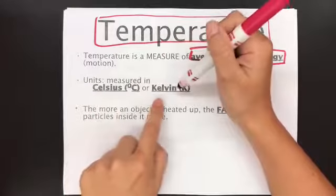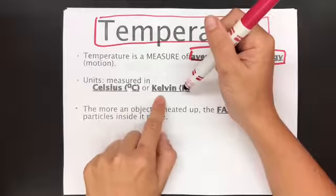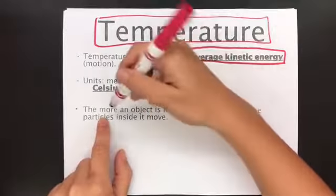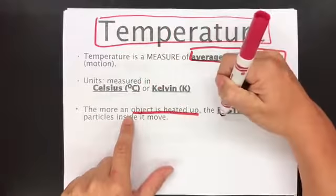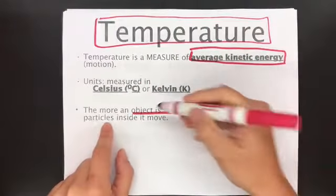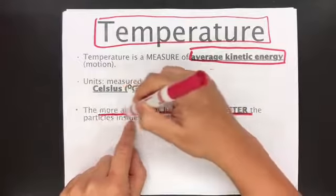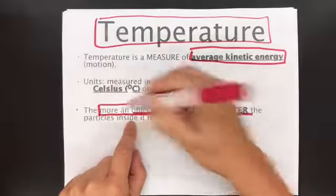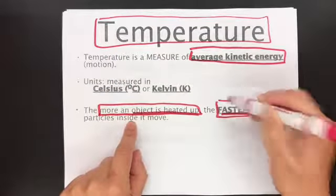This is how fast the objects are moving. It is measured in Celsius and Kelvins. Yes, Fahrenheit as well, but we're not going to be using Fahrenheit. The more an object is heated up, the faster the particles are moving. The more heated up it is, the faster it is moving.